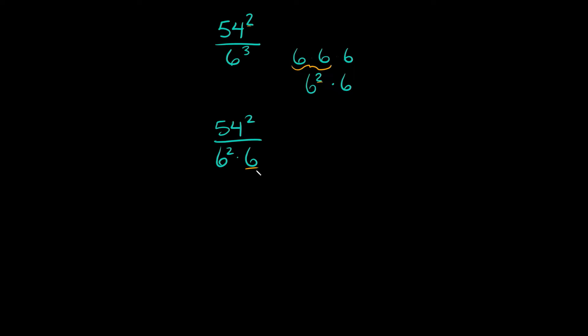Now as you can see, we have this single 6 by itself, so we're just going to factor that out. So then this is going to be equal to 54 squared over 6 squared times 1 over 6. The 6 is in the denominator, so it stays in the denominator.